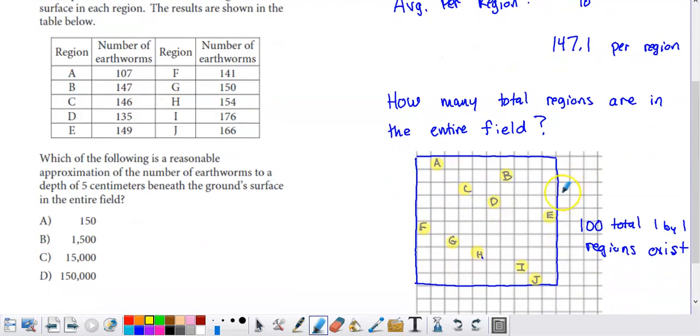How many regions of the field are there? Well, we've got the 10 that we considered plus the 90 that we didn't. So we've got 100 overall regions. So if we take this result and multiply it by 100, we are able to determine how many earthworms there are approximately for the entire field. So look at these options.